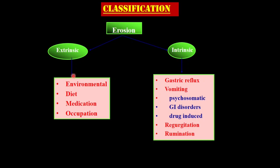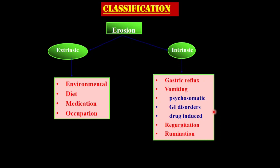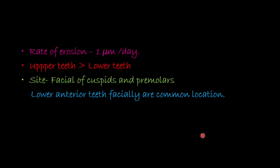Extrinsic erosion is generally seen over the labial surface of maxillary anterior teeth and appears as a scooped-out depression, whereas intrinsic erosive lesions are seen on the palatal surface of maxillary anterior teeth and appear as a concave depression over the entire palatal surface. There is no demarcation between the lesion and adjacent tooth surface in erosive lesions. The lesion surface is glazed. Erosion rate is the same for enamel, dentine, and cementum. Carious lesions usually do not occur on erosive tooth surfaces. The rate of erosion is 1 micrometer per day. Upper teeth are more commonly affected than lower teeth. The commonly affected sites are facial surfaces of cuspids and premolars, and in lower anterior teeth, the facial location is more common.